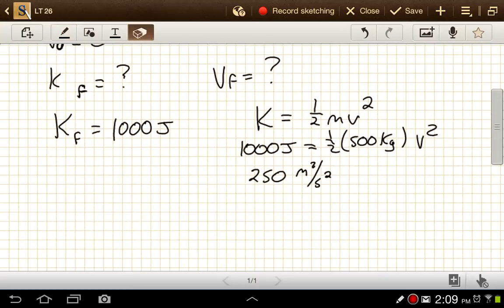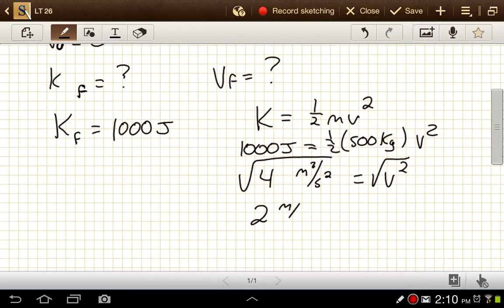And I did this math wrong. 2,000 divided by 500, that would be 4. 4 is equal to v squared. And then we can square root both sides. And we get 2 meters per second is equal to our final velocity.